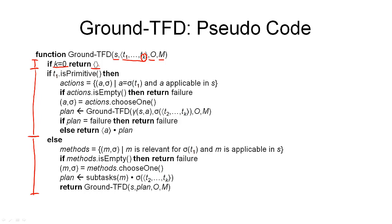Then we deal with the case where T1 is primitive. That means there must be an operator that has the same name as this task, and there must be actions that are instances of this operator with the same name as the task instantiated with some substitution sigma. These actions may be applicable in our state S, so we only look at actions that are applicable. We compute the set of actions that are unifiable with our first task T1 and are applicable in S — that's the set 'actions' here.